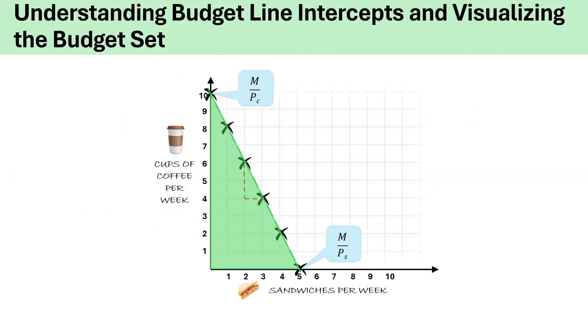Now let's visualize the budget line intercepts and the budget set graphically. We have placed sandwiches on the x-axis and coffee on the y-axis. What happens when the consumer spends his entire $20 budget? If all $20 is spent on sandwiches, the consumer can buy five sandwiches, since each sandwich costs $4.